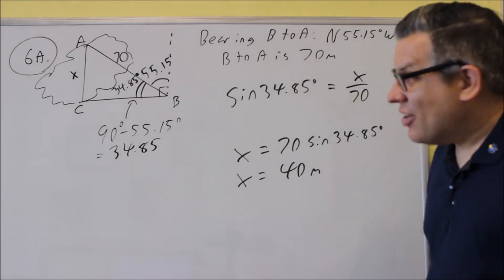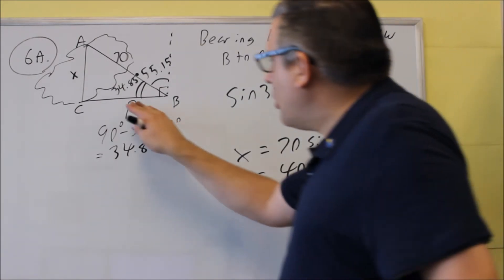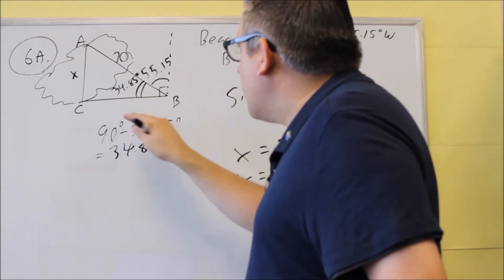Then they also want the distance from C to B. So this one would be the other distance that's used there.